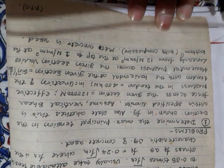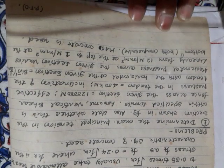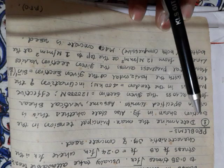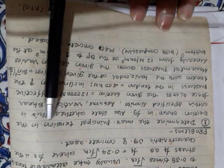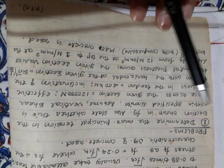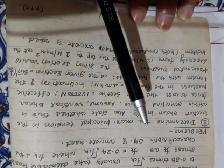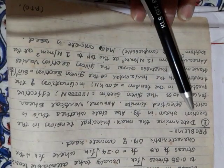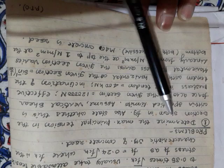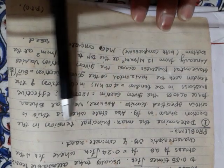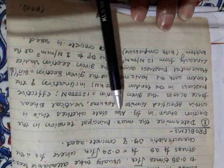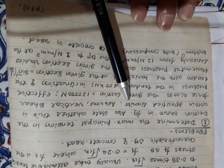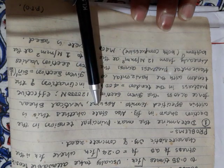Good morning, friends. From this class onwards we will start with the problem. The problem reads: determine the maximum principal tension in the section shown in the figure. The figure is on the following page. The section is an I-section. Determine the maximum principal tension and also state whether it is within the specified limits or not.